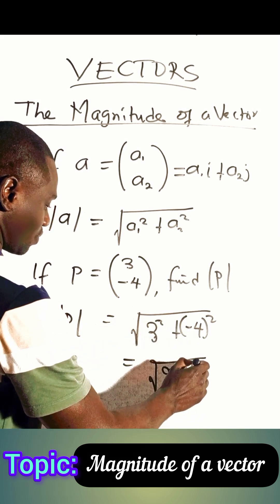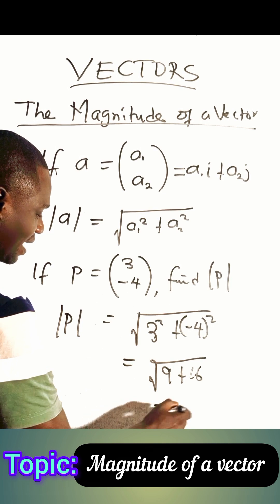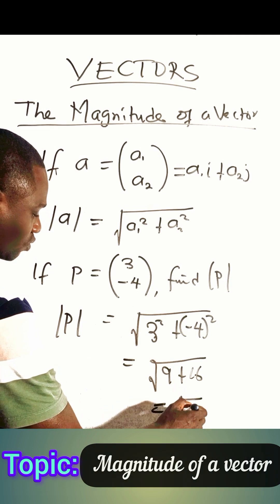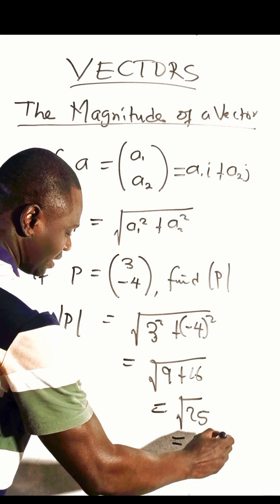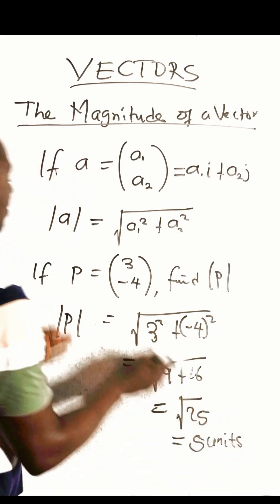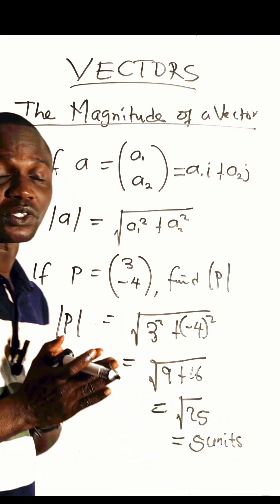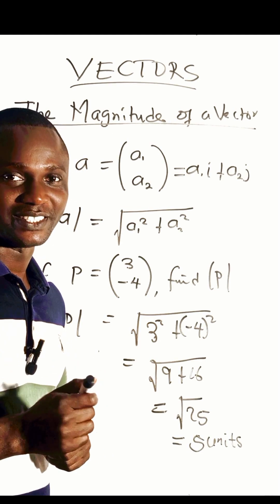If you add this together you have the square root of 25, and the square root of 25 is 5. So the size of this vector P is 5 units.